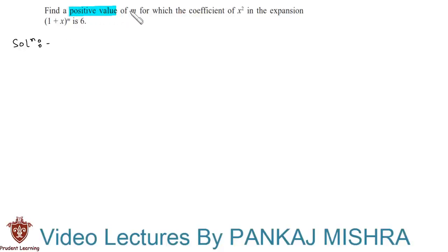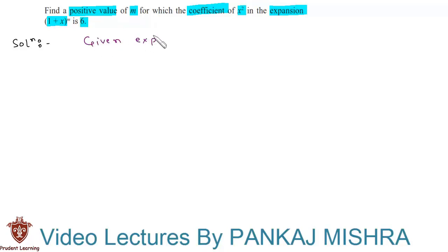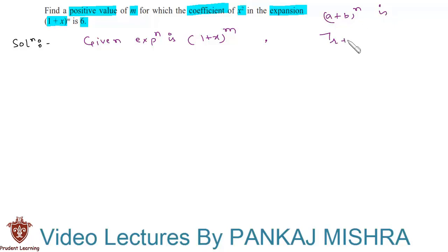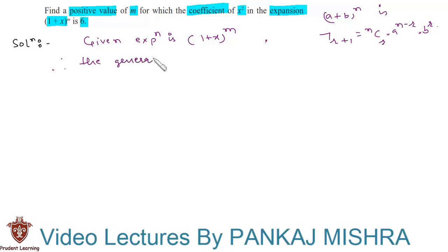Find a positive value of m for which the coefficient of x squared in the expansion of (1+x)^m is 6. Let us proceed with the solution. The given expression is (1+x)^m. We know that the general term for the expansion of (a+b)^n is given by T(r+1) = nCr into a^(n-r) into b^r.